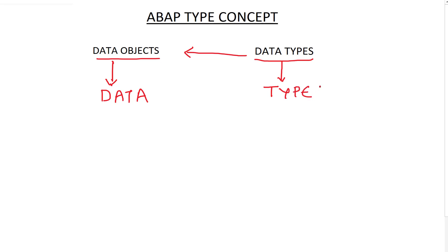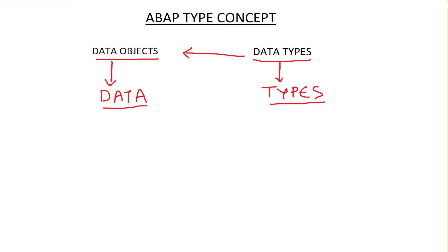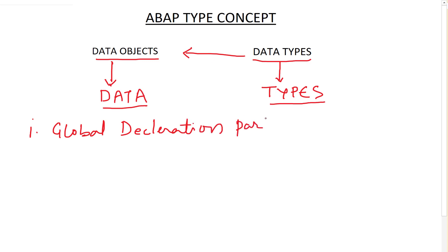I'll be introducing you to these keywords one by one. The next keywords we'll explore are DATA and TYPES — we'll see the syntax to use the DATA keyword to define a data object and the TYPES keyword to define data types. If I break down an ABAP program into two parts, the first part is the global declaration part. In this global declaration part of the program we use the DATA and TYPES keywords to first define our memory locations where we can store the external data we're planning to process.